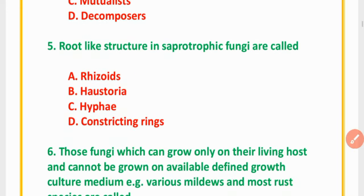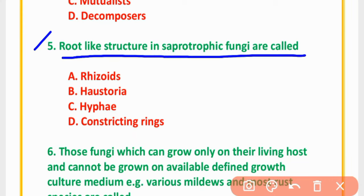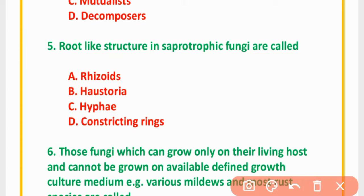MCQ Number 5: Root-like structures in saprophytic Fungi are called — Rhizoids, Haustoria, Hyphae, or Constricting Ring. The correct option is option A: Rhizoids.